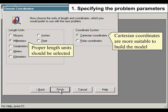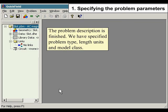Proper length units should be selected. Cartesian coordinates are more suitable to build the model. The problem description is finished. We have specified problem type, length units and model class.